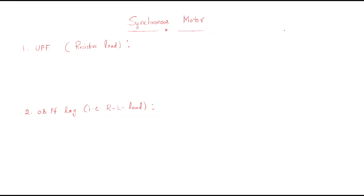Once again, let us recollect: armature reaction means the effect of the main field due to the armature flux. This armature reaction depends on the load, that is the load current, which is the armature current. By understanding the armature current, we can determine how the main field flux will be varied.